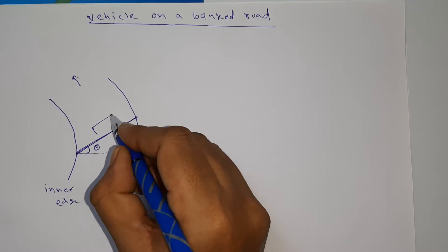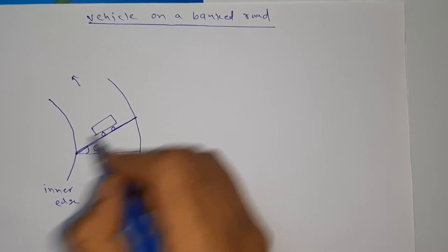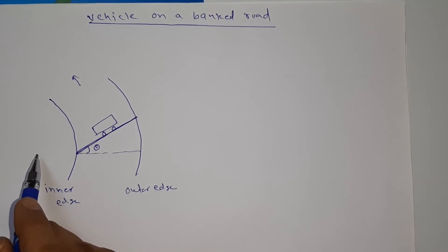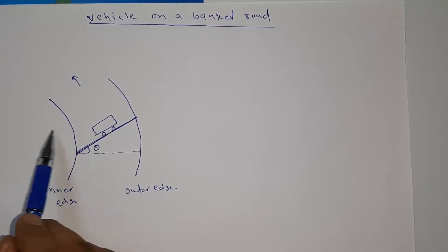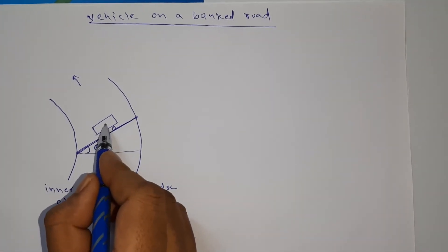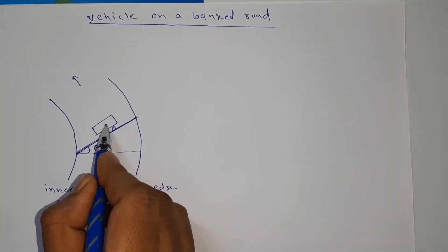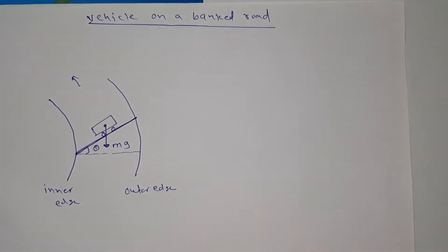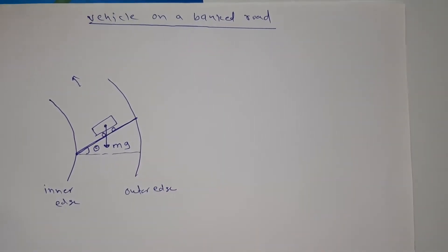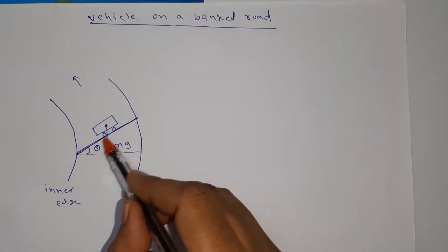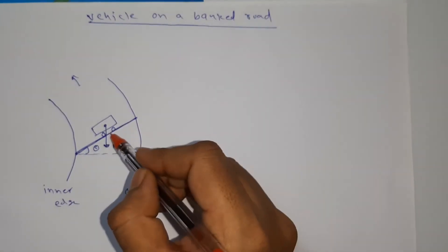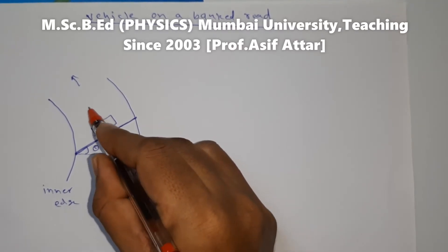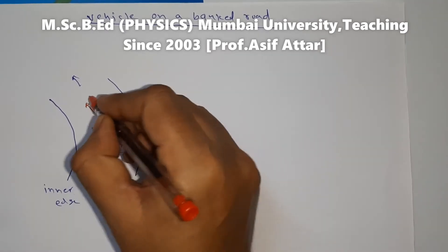Now suppose this is our vehicle. For circular path, one force is required that we call centripetal force, and it always acts towards the center. The weight of the vehicle always acts in the downward direction, equal to mg. Normal reaction is always perpendicular to the surface, so normal reaction N is normal to the banked surface.